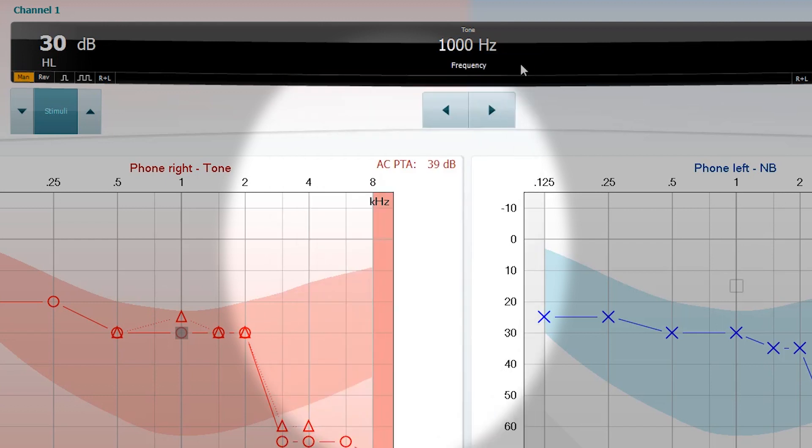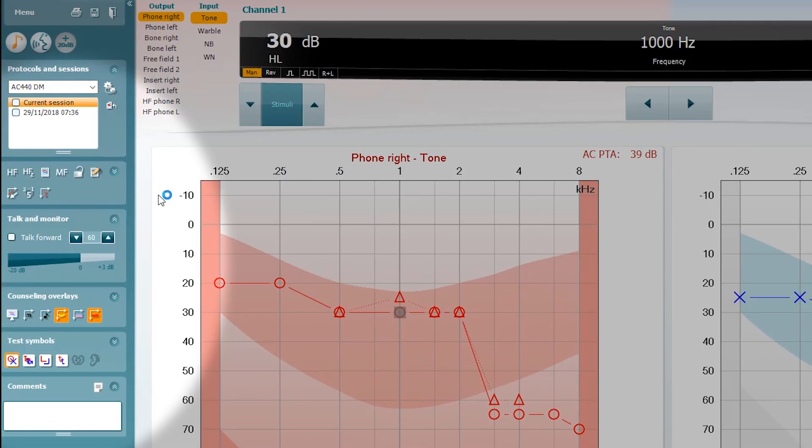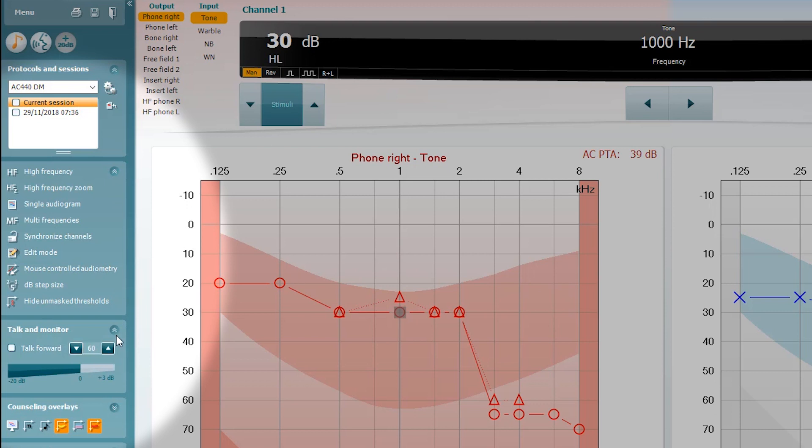So when I click away from that now, you'll now notice that on the left panel, the icons have now disappeared for those features that I've turned off.